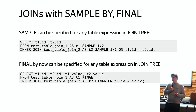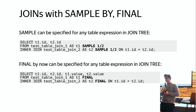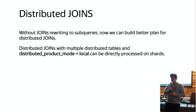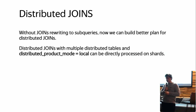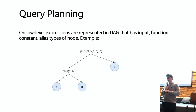SAMPLE BY can now be specified for any table expression in the JOIN tree, which is very useful when you have many JOINs and don't want to read all the data. Similarly, FINAL can now be specified for any table expression in the JOIN tree — very natural for MergeTree engines where you want to select the final state. For distributed JOINs, without rewriting JOINs to subqueries, we can now build a better plan: distributed JOINs with multiple distributed tables and distributed_product_mode=local can be directly processed on shards, resulting in significant performance improvement.